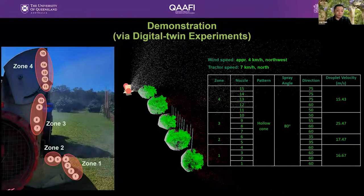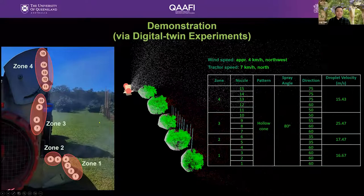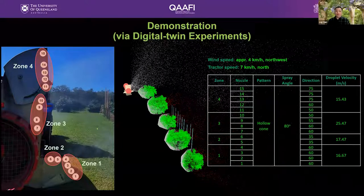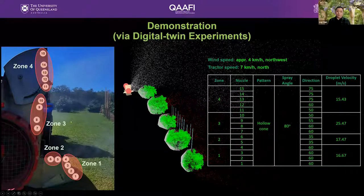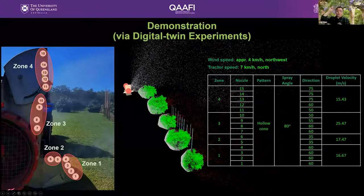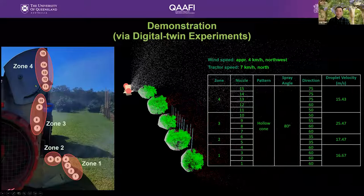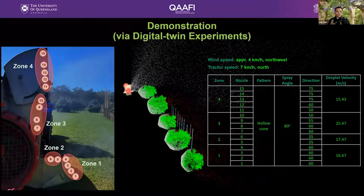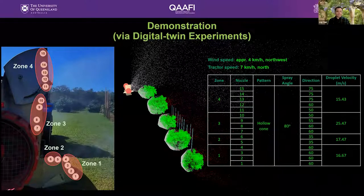The sprayer used for the field experiment we just looked at can be used as an example to demonstrate what digital twin-based investigations can do. For this sprayer we used the right wing with 15 nozzles located in four zones. Each nozzle's direction can be manually adjusted in reality, and some zones' angles can also be adjusted. The table lists the settings that have long been used by the sprayer as their default configuration, and we can use the digital twins to assess whether those default settings are good or not.